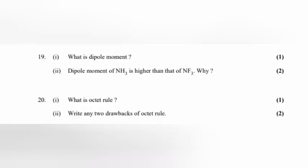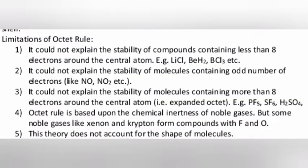Part 2: Write two drawbacks of octet rule. Answer: It could not explain the stability of compounds containing less than 8 electrons around the central atom, e.g. LiCl, BeH2, BCl3, etc. Second, it could not explain the stability of molecules containing odd number of electrons like NO, NO2, etc.